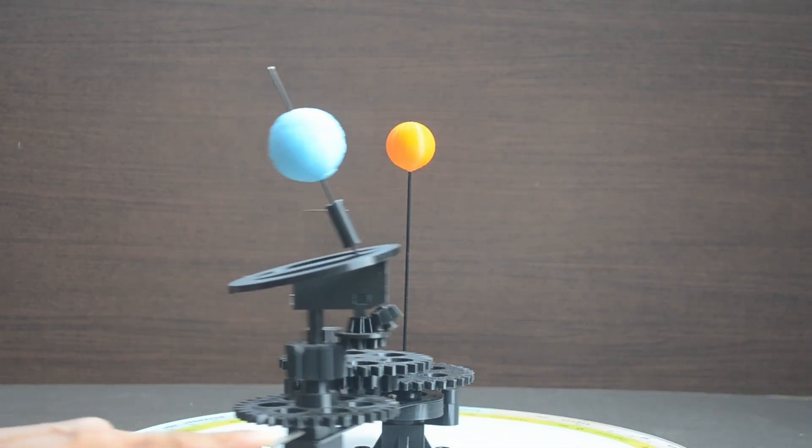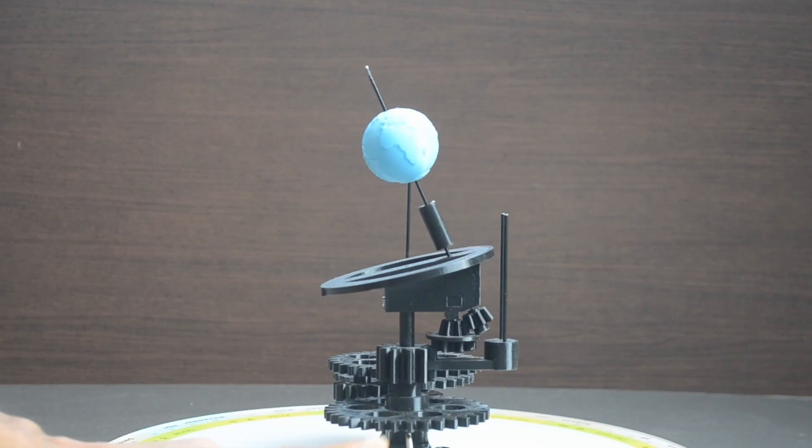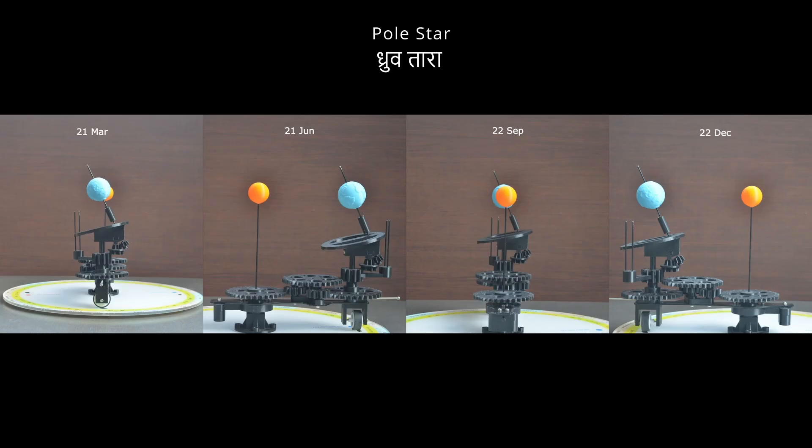As you can see, orientation of the Earth's axis has not changed throughout the year. It is always pointing towards one location in the sky. The star at this location is also known as Polestar.